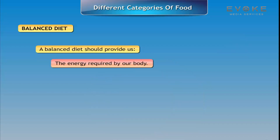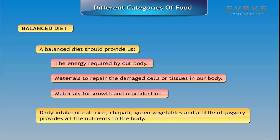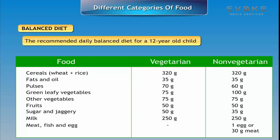A balanced diet provides materials to repair damaged cells or tissues in our body, and materials for growth and reproduction. A daily intake of dal, rice, chapati, green vegetables, and a little jaggery provides all the nutrients to the body. The recommended daily balanced diet for a 12-year-old child is as shown in the table.